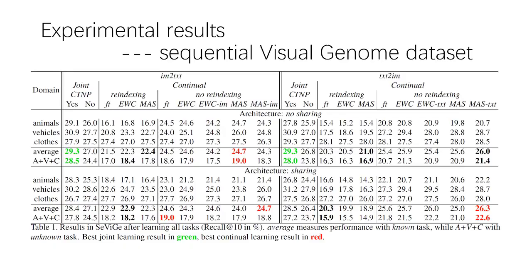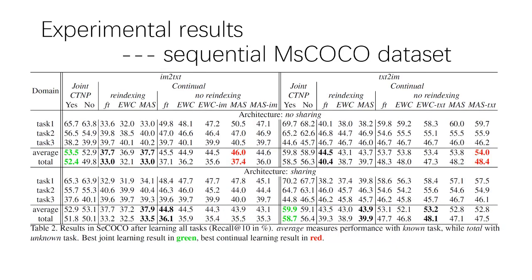With these proposals and observations, we conducted experiments on the Visual Genome dataset. For the architecture, no-sharing and sharing refers to whether the top layers of the two branches share some parameters. By sharing parameters, the drift of those parameters is guided in the same direction.